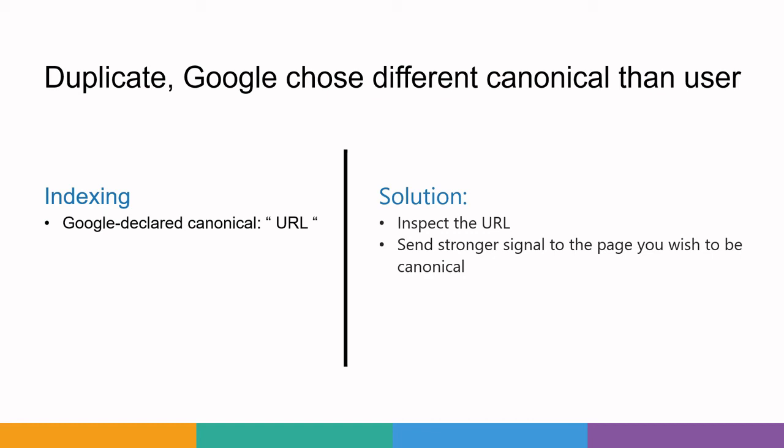Otherwise, if you want a different URL to be the canonical, you need to send a stronger signal because Google is not taking that URL as the canonical. Make sure you have added the link element with the canonical attribute, or you can set a 301 redirection to send a stronger signal and make search engines take your version of the page as the canonical page.